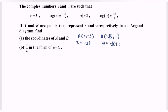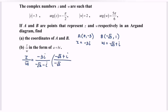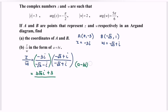Now for part B, z over the conjugate of w equals negative 3i over the conjugate of w, where the conjugate of w is negative root 3 minus i. To rationalize the denominator, we multiply by the conjugate, which is negative root 3 plus i over negative root 3 plus i. Expanding the numerator: negative 3i times negative root 3 gives 3 root 3 i, and negative 3i times i gives plus 3.